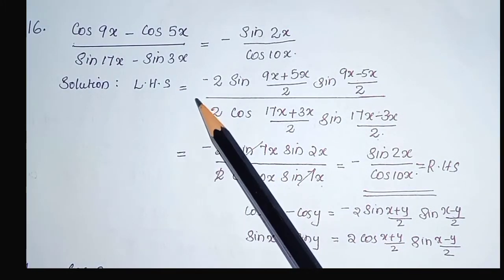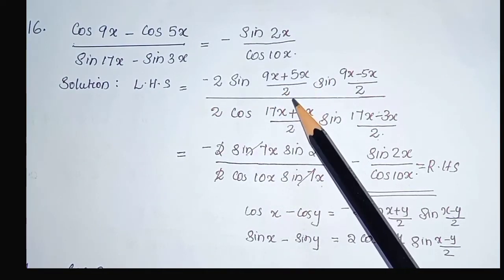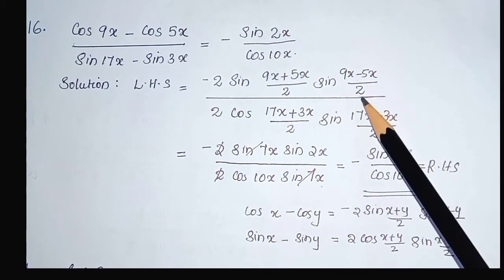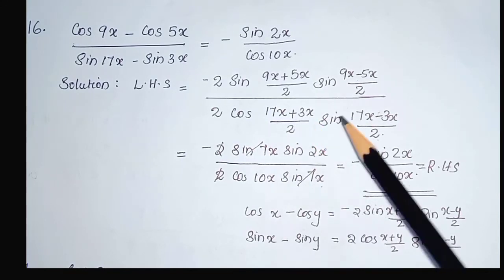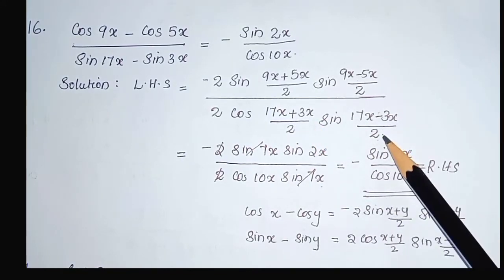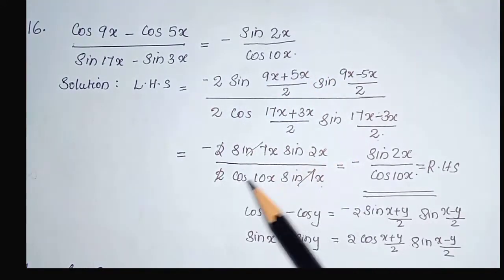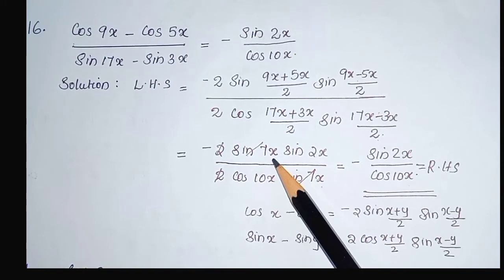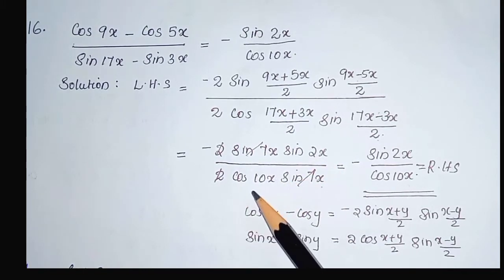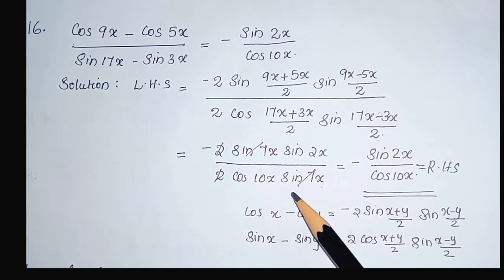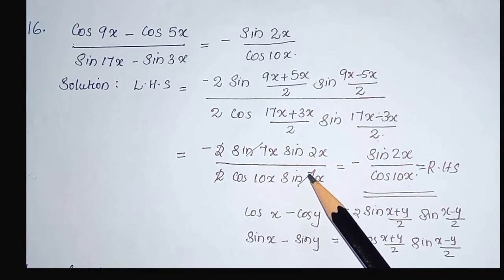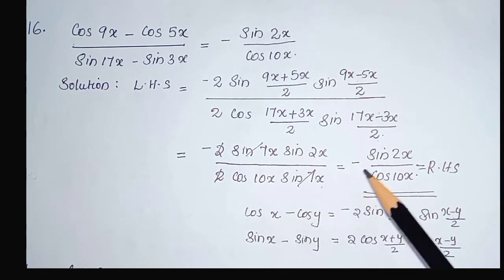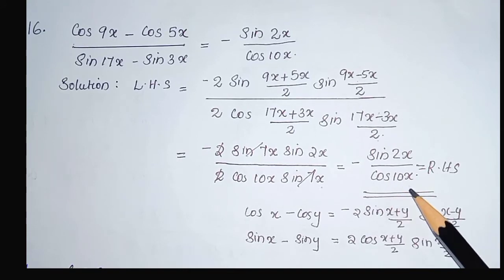That is equal to minus 2 sin((9x+5x)/2) sin((9x-5x)/2) divided by 2 cos((17x+3x)/2) sin((17x-3x)/2). Calculating this, we got minus 2 sin 7x divided by 2 cos 10x cos 10x sin 7x. Here, 2 sin 7x is common to both numerator and denominator. We can cancel this and we got the final result: negative sin 2x divided by cos 10x. That is equal to RHS.